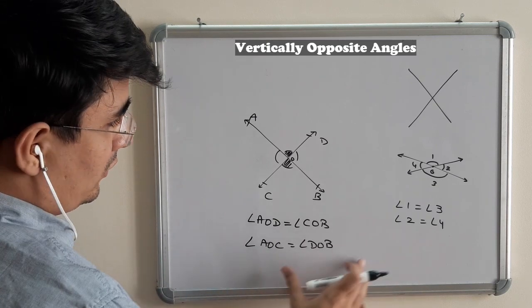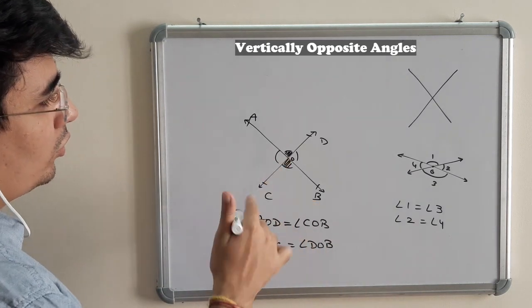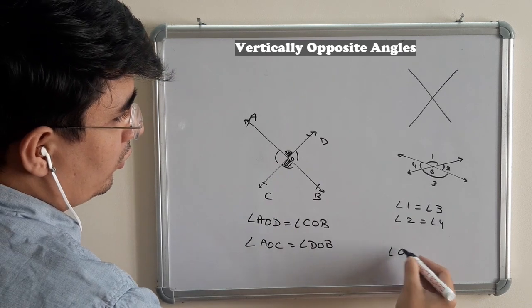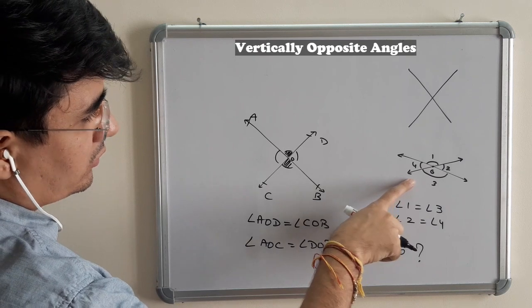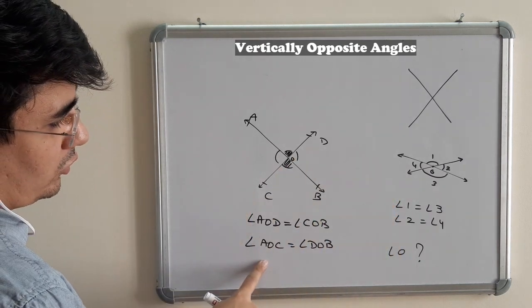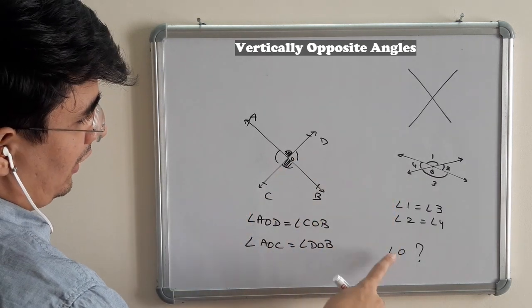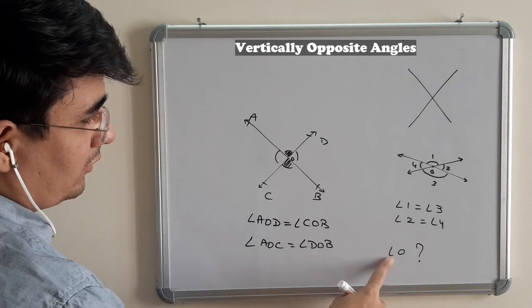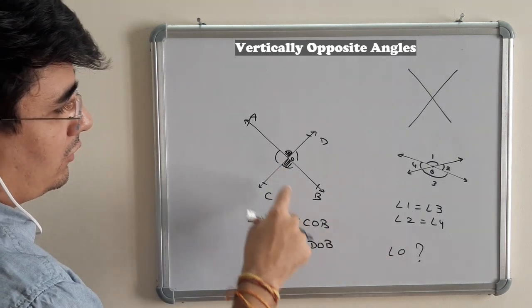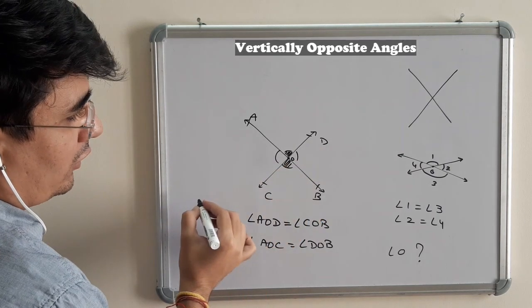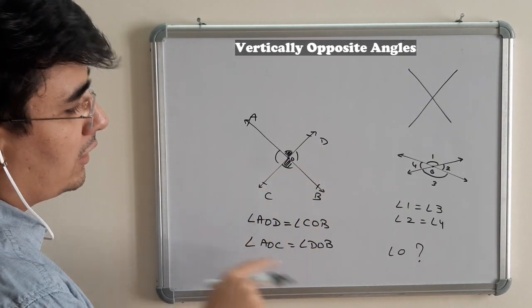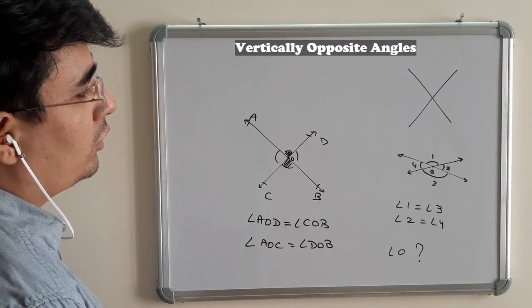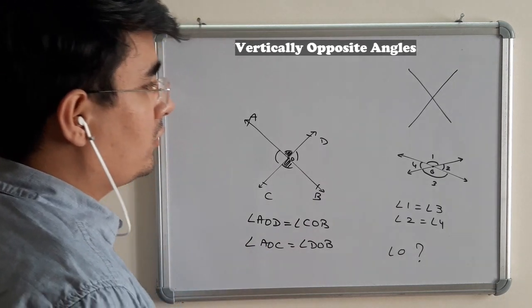But make sure this is the only two ways. If you write angle O, we won't be able to know which angle O you are talking about. Either you write it in numbers or you write full names. Writing angle O by single letter creates confusion when the same vertex O has multiple angles. You have to tell from which direction you are talking about. I hope this point is also clear regarding vertically opposite angles.